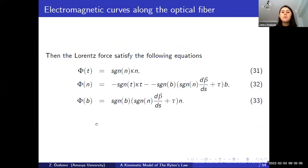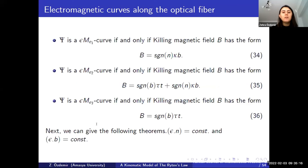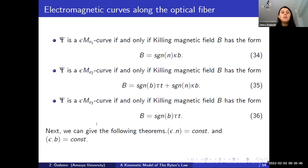Using the geometric phase model, we obtain the Lorentz force equations related to the Frenet frames, satisfying equations 31, 32, and 33. Using the Killing equations, the geometric phase model, and the electromagnetic curve equations, we obtain that PC is an E1-electromagnetic curve if and only if the Killing magnetic field has the form in equation 34. PC is an E2-electromagnetic curve if and only if the Killing magnetic field B has the form in equation 35. And PC is an E3-electromagnetic curve if and only if the Killing magnetic field B has the form in equation 36. Similar characterizations can be given for E perpendicular-N and E perpendicular-B.